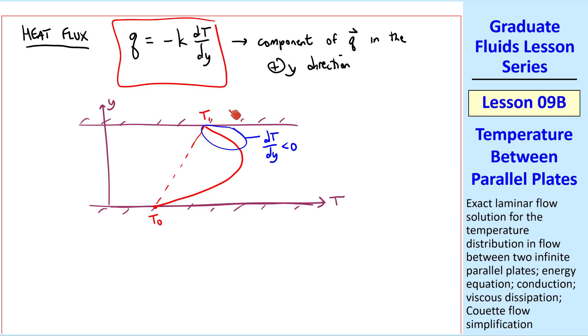Temperature is decreasing in the y direction. Therefore, because of this negative sign, q is up along the top wall. Heat is transferred from the fluid to the wall.